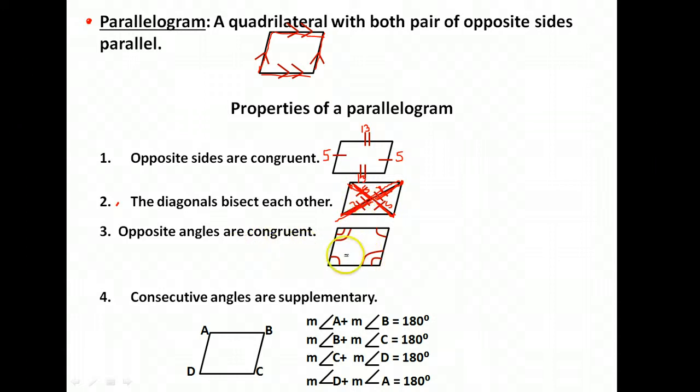Opposite angles are congruent. So if we take a look at this, the angles across the figure from one another are the same size.